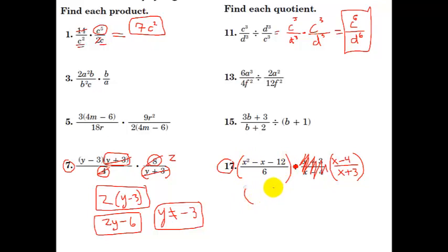Now this side here I'm going to factor. So this is going to factor because it's a quadratic. I've got an x, I've got an x, multiplies to negative 12 and adds to negative 1. It's going to be a negative 4 and a positive 3 all over 6.